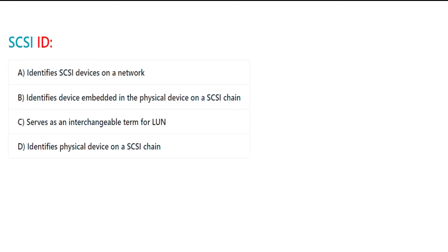SCSI ID: A. Identifies SCSI devices on a network. B. Identifies device embedded in the physical device on a SCSI chain. C. Serves as an interchangeable term for LUN. D. Identifies physical device on a SCSI chain.